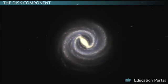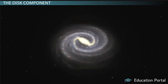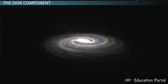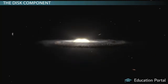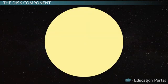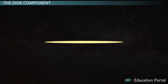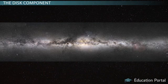To help better understand how this is so, imagine our galaxy is a wafer disk. The disk component of our galaxy is the disk of our galaxy — the components within the plane of the galaxy. If you're looking at the wafer face-on, it looks like a flat circle. But if you look at it edge-on, that's the plane of the galaxy, and it looks like a thin band stretching from left to right, just like it would on our own night sky.